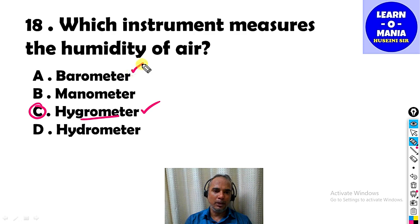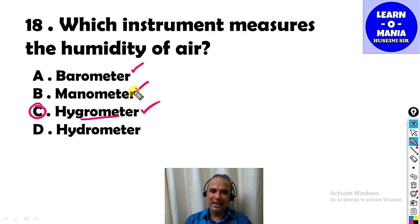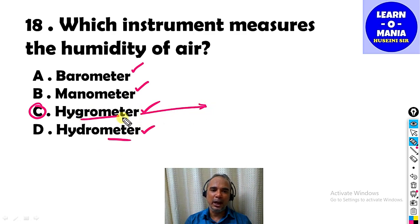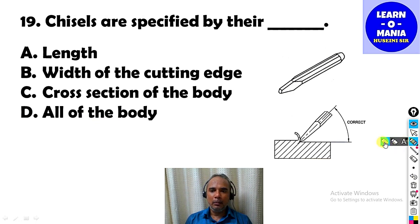A barometer measures atmospheric pressure. A manometer measures velocity pressure, total pressure, and static pressure in water column. A hydrometer checks density. To check humidity, the instrument is the hygrometer — option C.